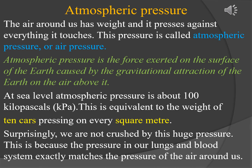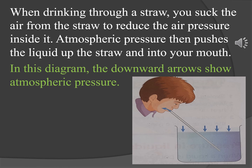Atmospheric pressure. The air around us has weight and it presses against everything it touches. This pressure is called atmospheric pressure, or air pressure. Atmospheric pressure is the force exerted on the surface of the earth caused by the gravitational attraction of the earth on the air above it. At sea level, atmospheric pressure is about 100 kilopascals — equivalent to the weight of ten cars pressing on every square meter. Surprisingly, we are not crushed by this huge pressure, because the pressure in our lungs and blood system exactly matches the pressure of the air around us. When drinking through a straw, you suck the air from the straw to reduce the air pressure inside it; atmospheric pressure then pushes the liquid up the straw and into your mouth. The downward arrows in this diagram show atmospheric pressure.